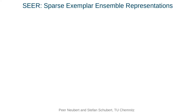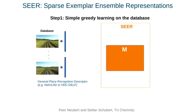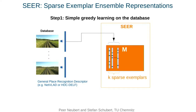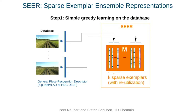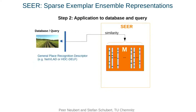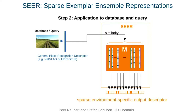The first step is a simple greedy learning on the database to create an internal representation M. The input are general place recognition descriptors like NetVLAD or HTC-DELF. SEER starts with an empty set M and adds for the first incoming database descriptor an ensemble of k sparse exemplars. An exemplar is simply a sparsified version of the input descriptor, using weighted sampling to select about 5% of input dimensions with large absolute value. For each further descriptor, we test whether there are already k similar exemplars in M that can be reused. The second step applies the exemplar ensembles to database and query descriptors to produce SEER output descriptors — a sparse vector of similarities to the most similar exemplars.